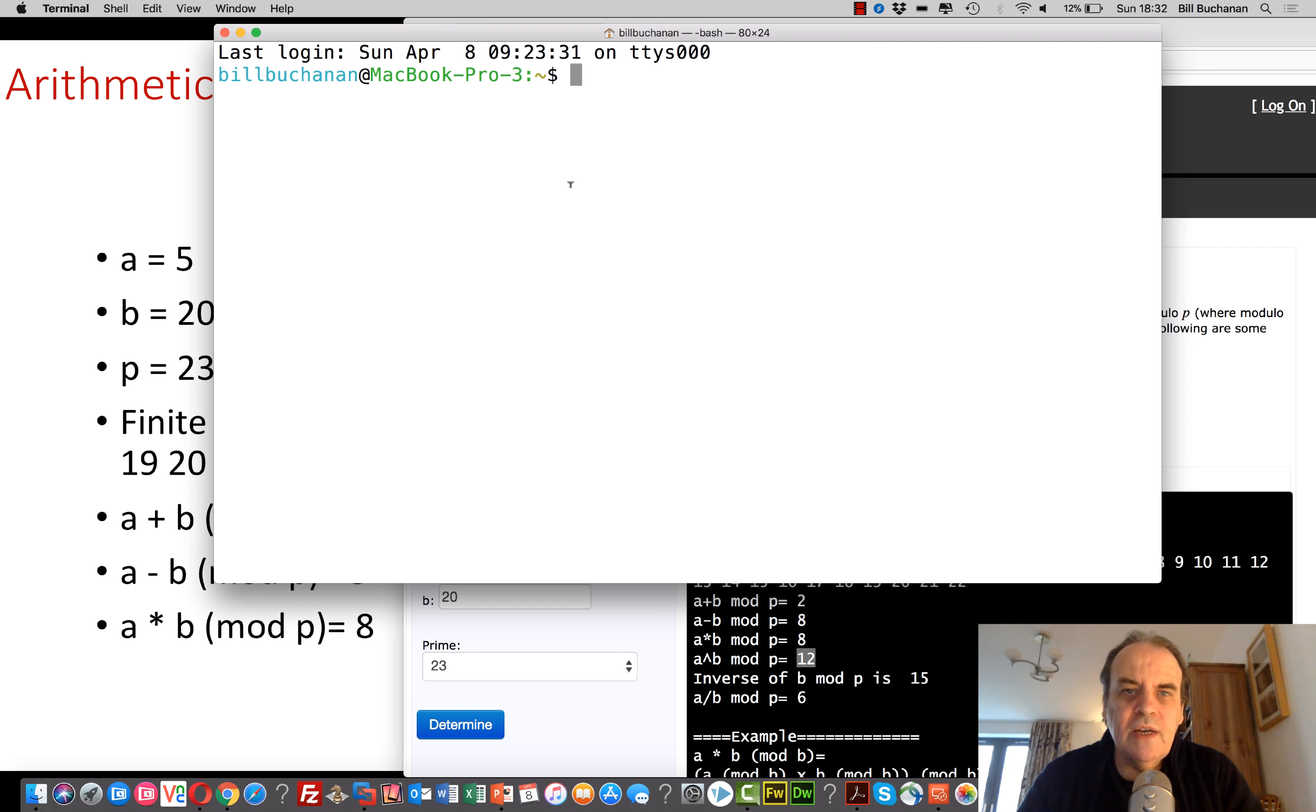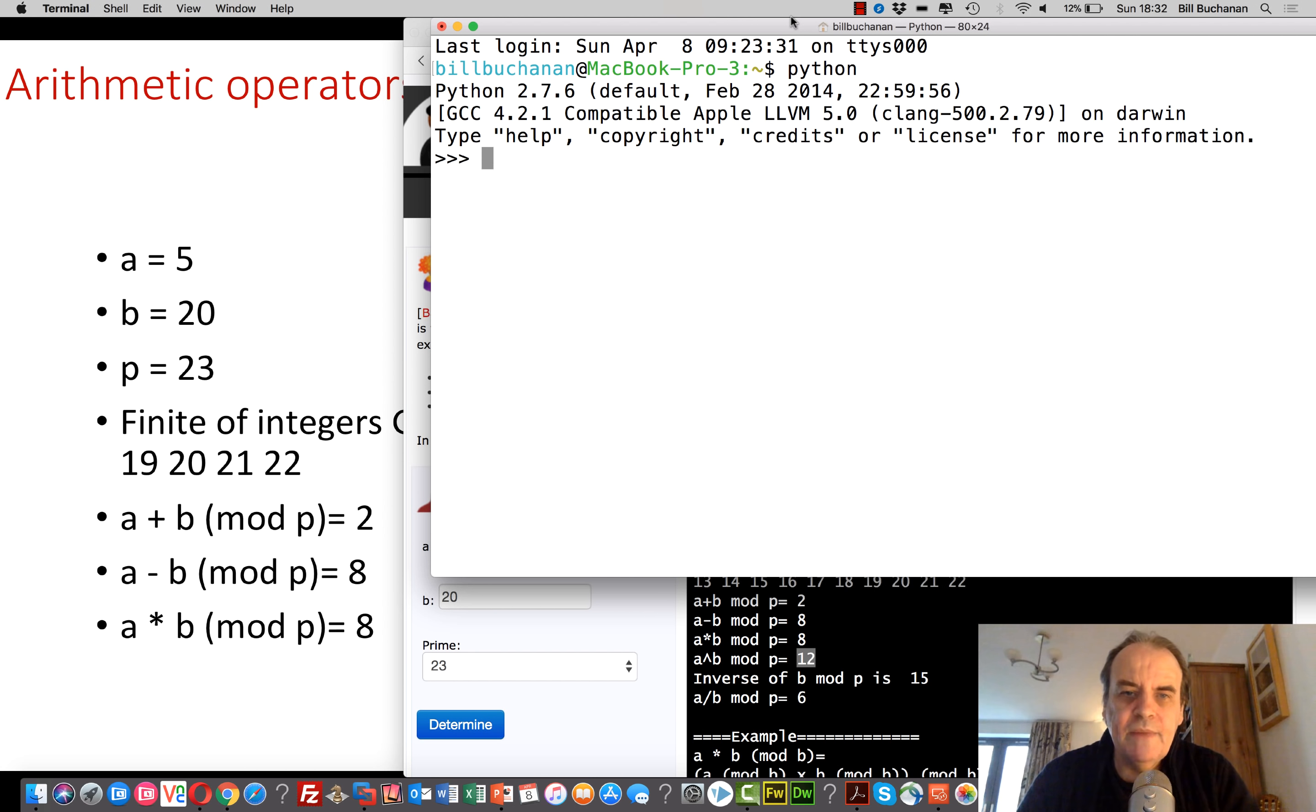We can use Python to be able to do these calculations quickly. So a is equal to 5, b is equal to 20 and prime is 23. So we'll just print a plus b mod p. We'll make sure that our brackets are in there. a plus b mod p is 2. So we can do our subtraction.